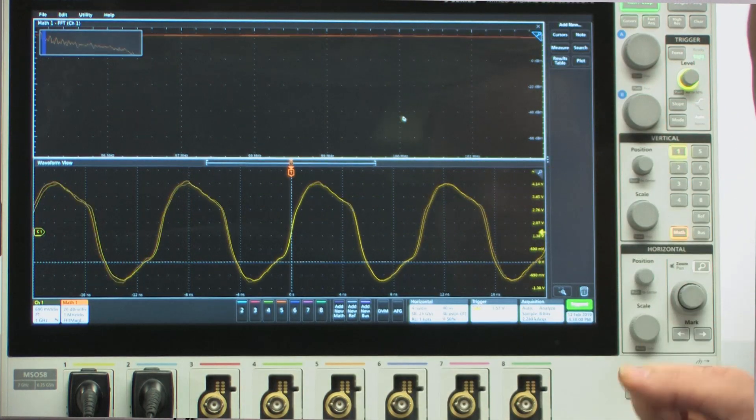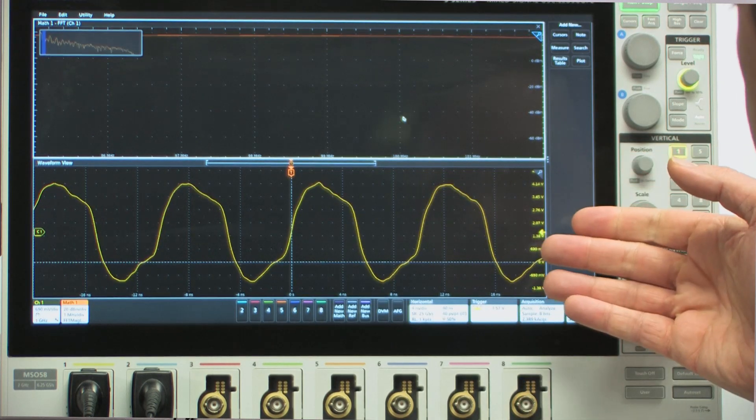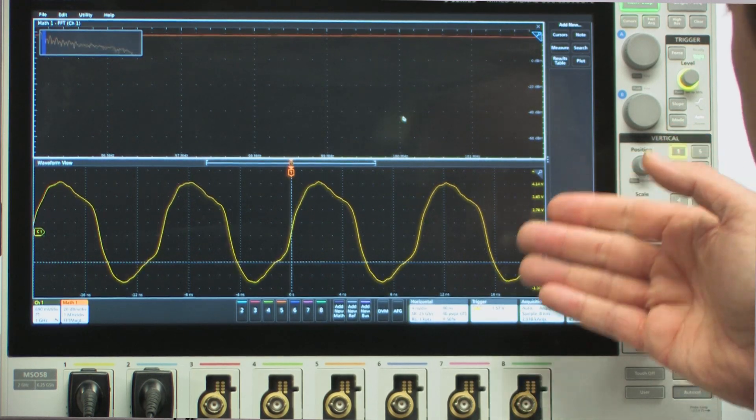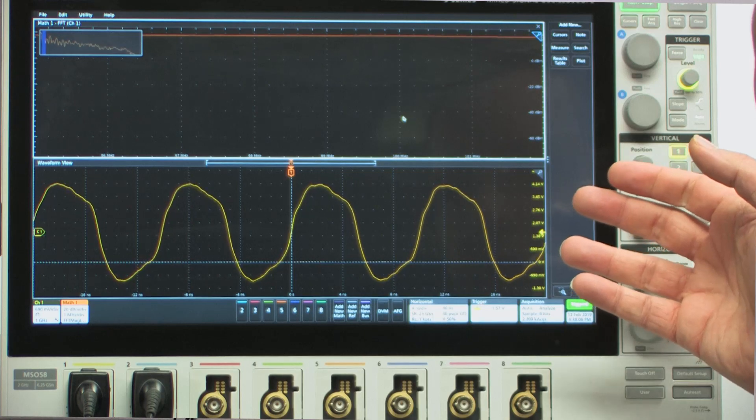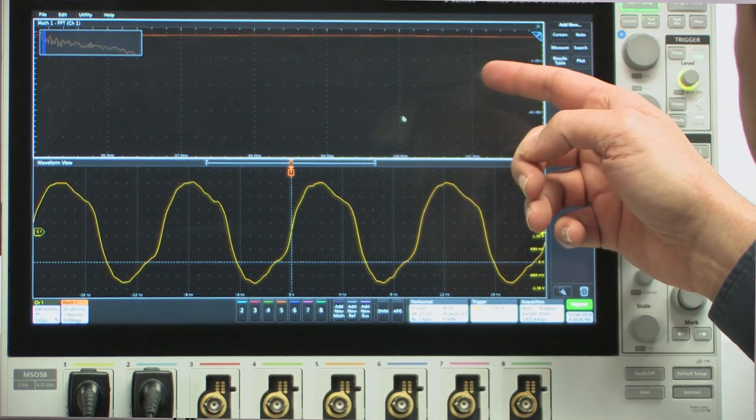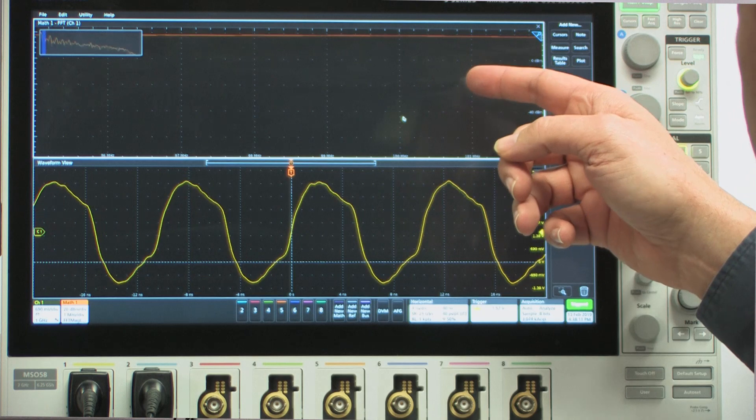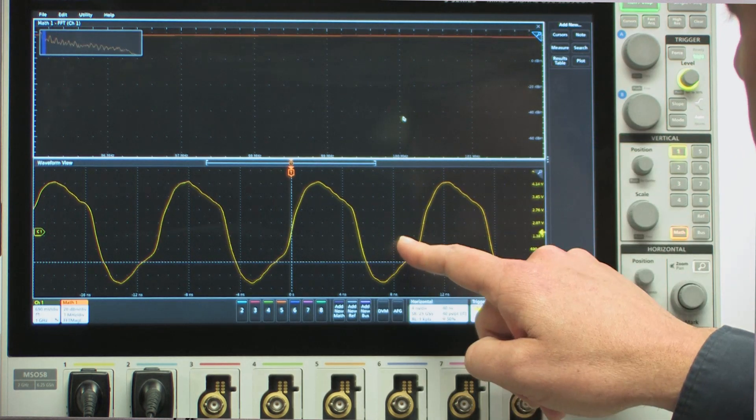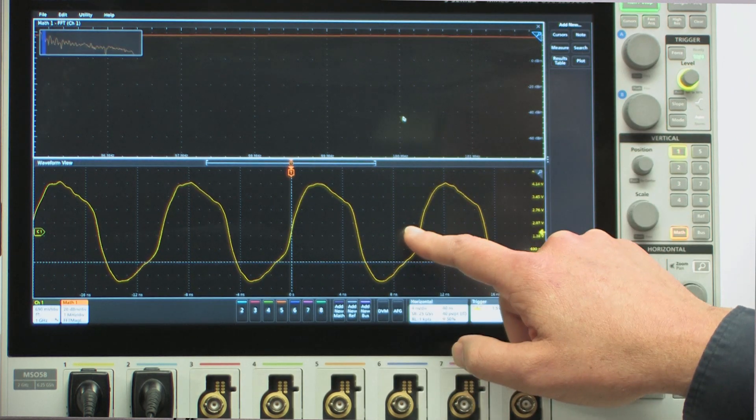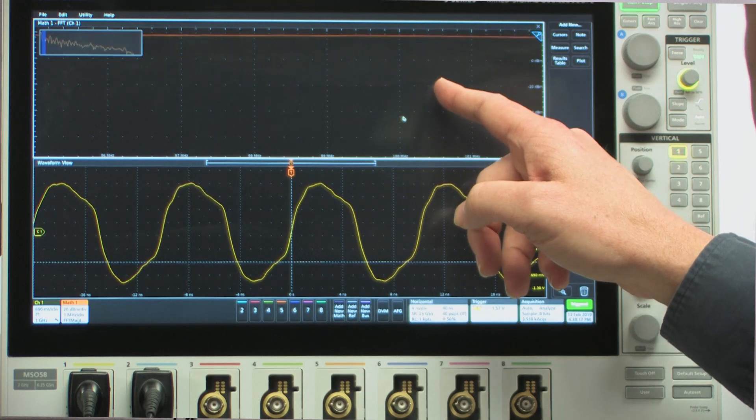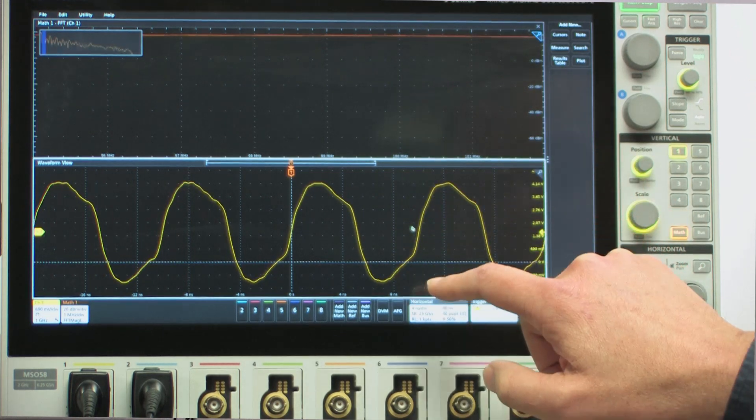Notice that I just get a flat line across the top. This gets to the point that I was making above about understanding the sample rate, record length, and time per div settings of the oscilloscope. Resolution in my frequency domain display depends on the amount of time I capture in the time domain display. So to increase my resolution here, I need to capture more time here.